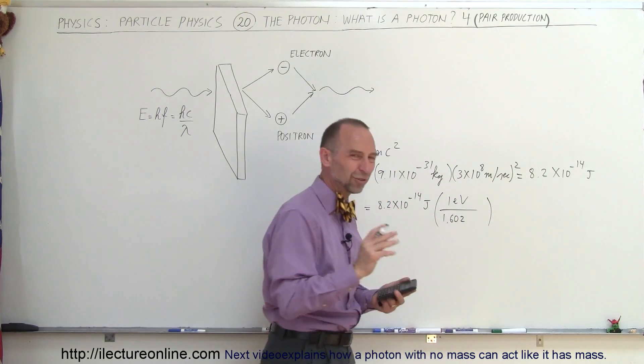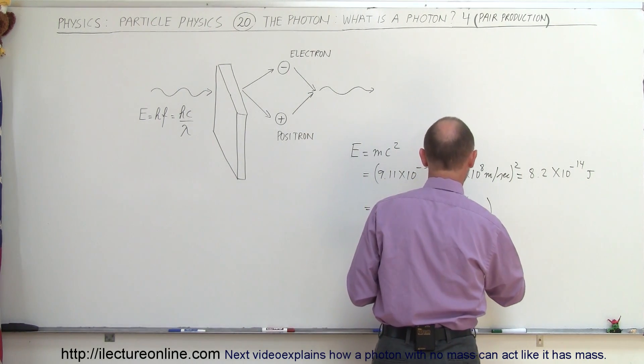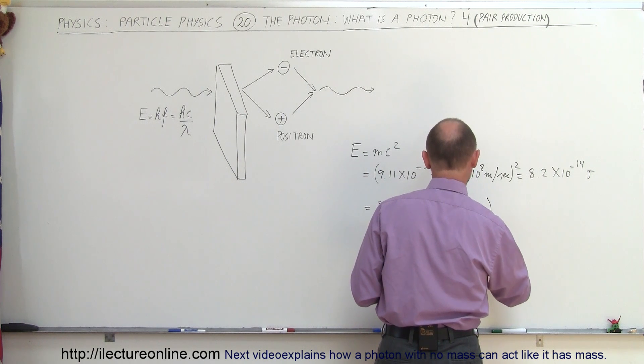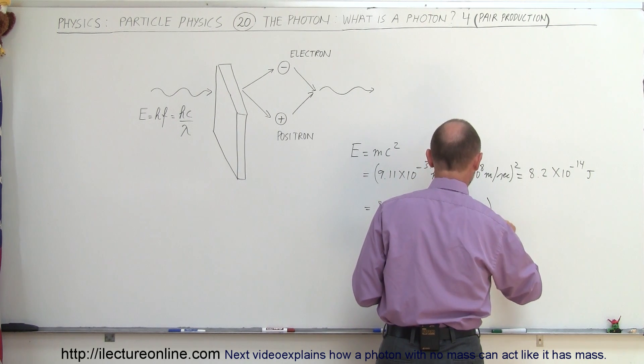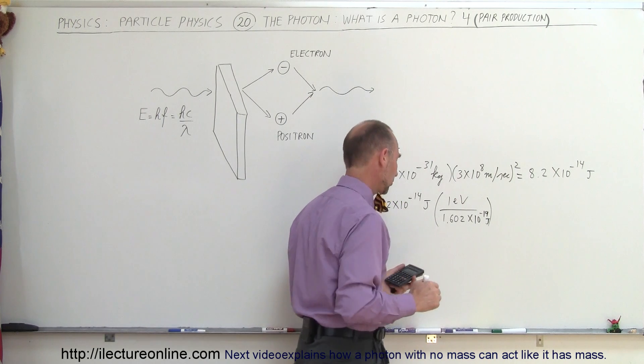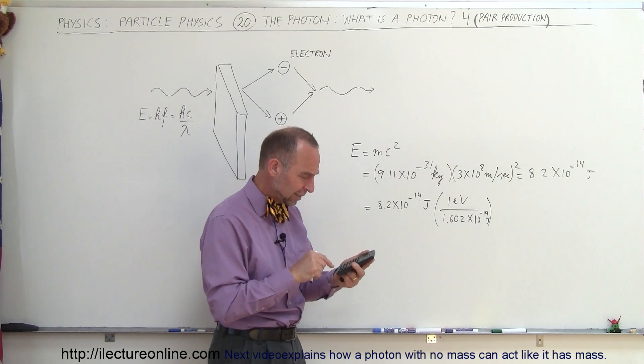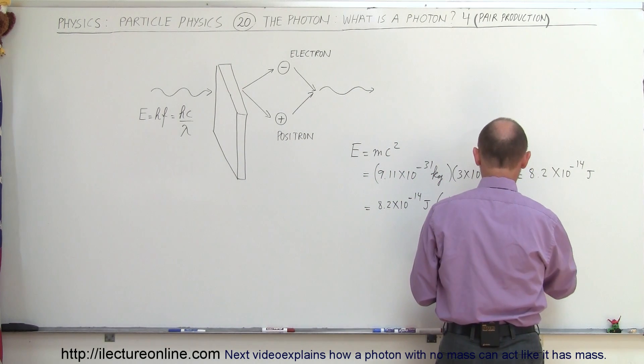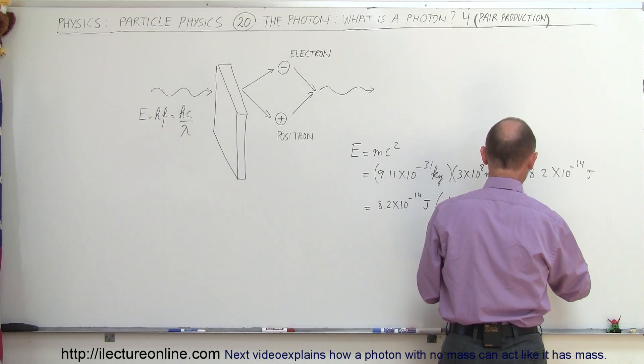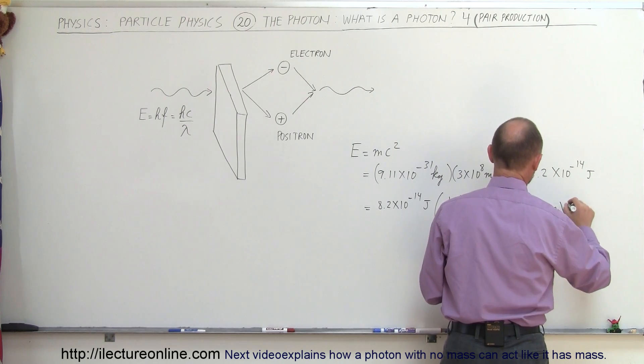We're going to give it a few more significant figures to get a slightly more accurate value, and that would be times 10 to the minus 19 joules. So it's that many joules per electron volt. So divide this by 1.602 E to the minus 19, and we get about 512,000 electron volts.